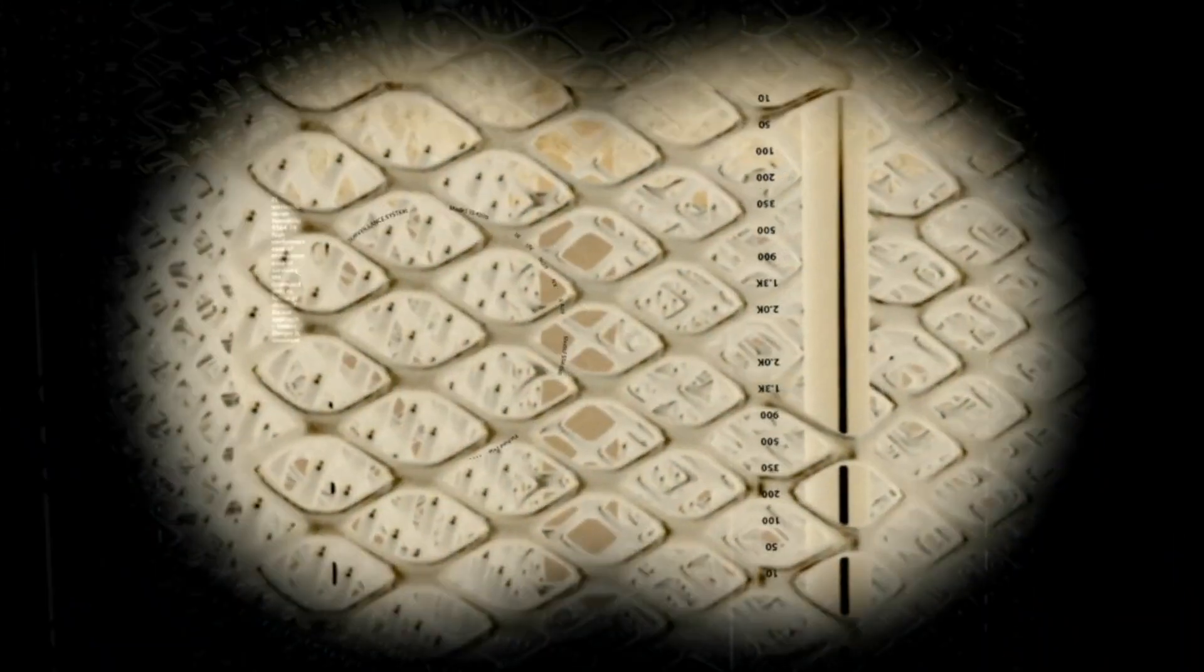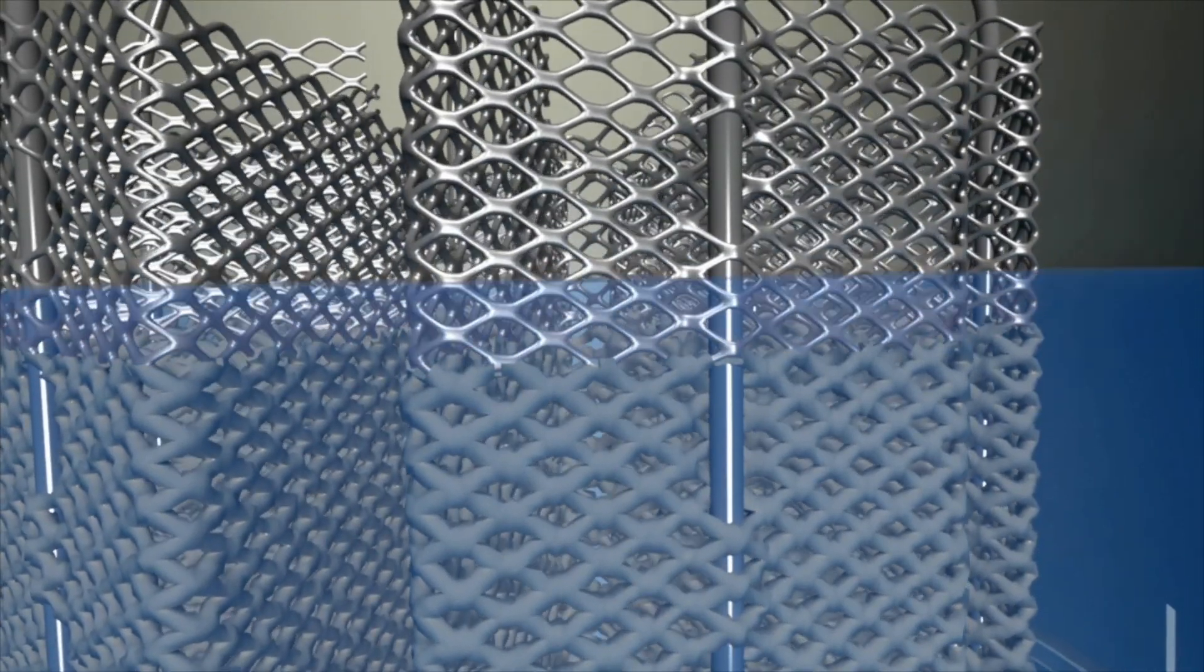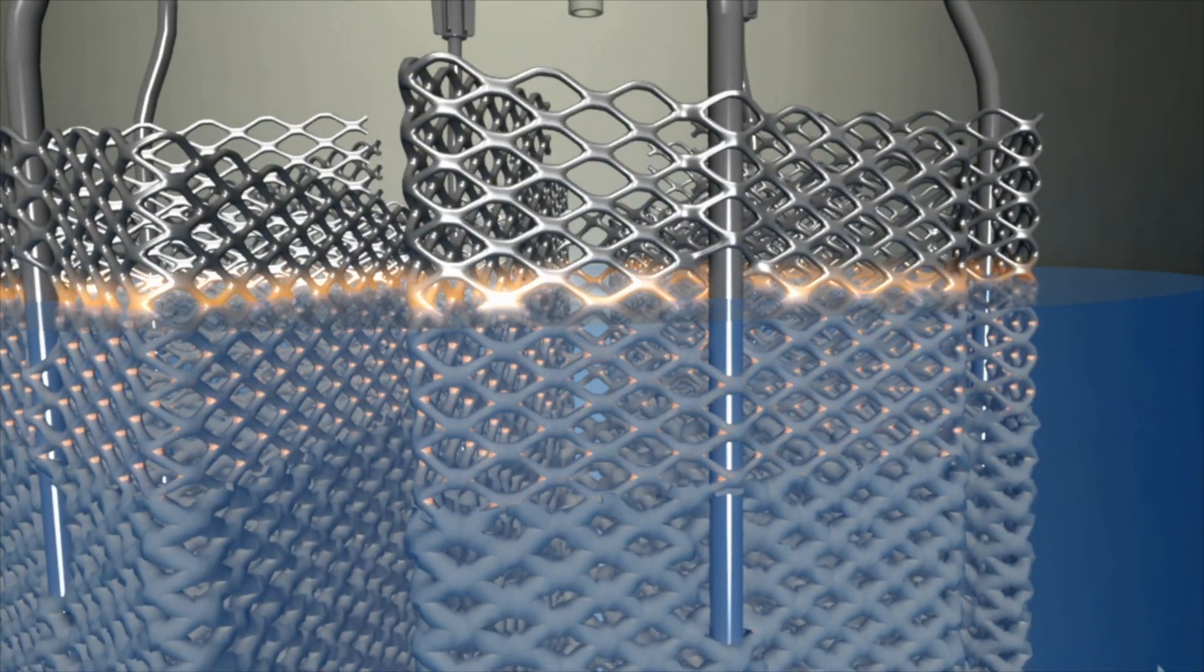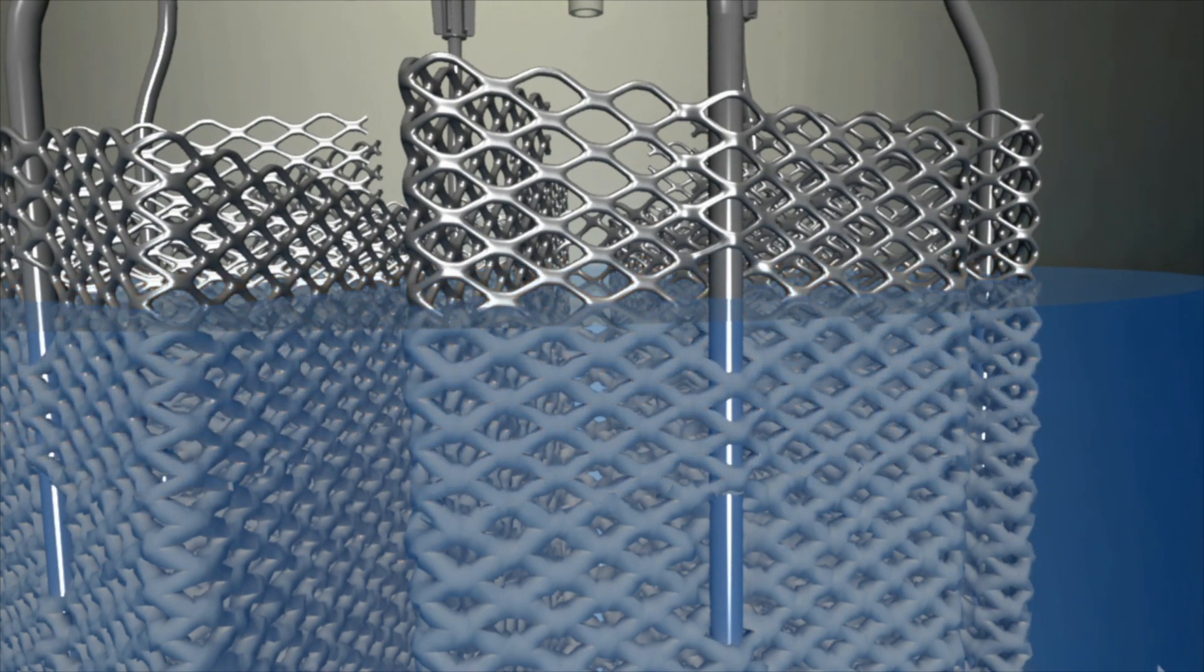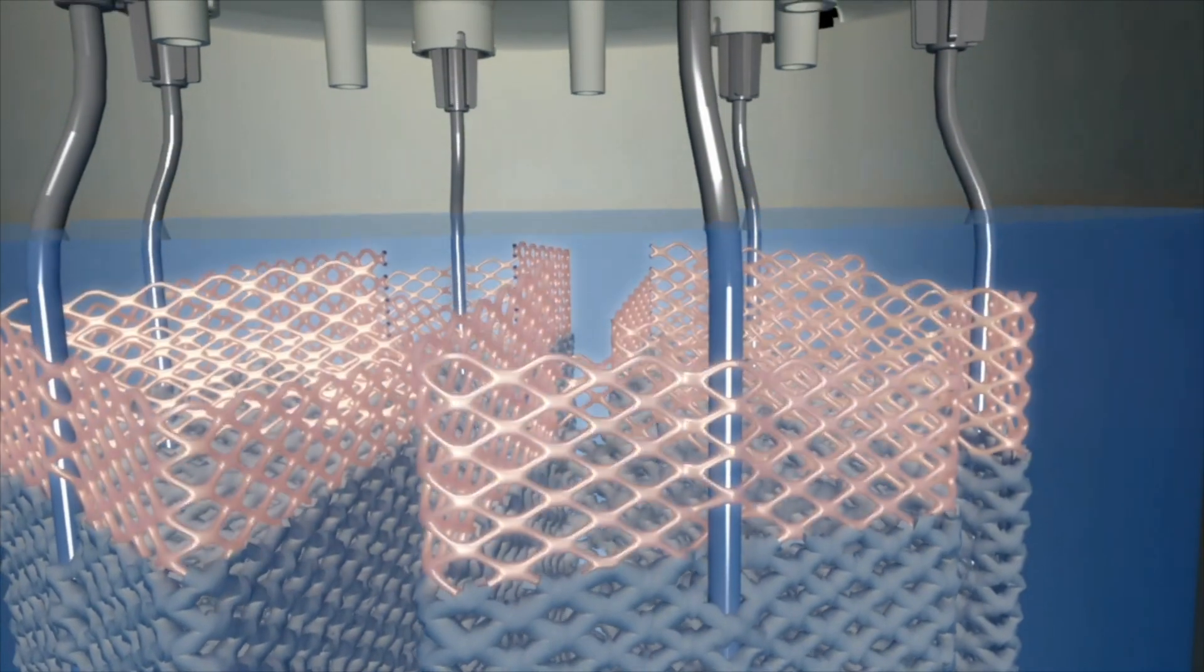Continuous operation results in mineral deposits building up on the electrodes as well. The control system detects this and automatically raises the water level. Clean electrode surfaces are then submerged, maintaining optimal performance and accurate humidity control.